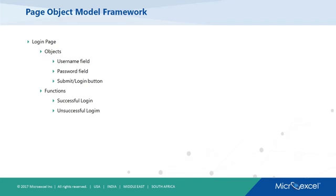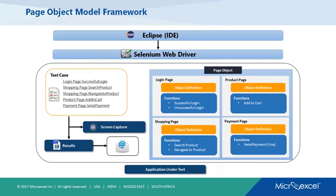All the element definitions and functions that can be done on a page are put in that class. When you create a test case, you just call those functions from the page class. For example, on a login page you may have three objects: username, password, and a submit login button, and two functions: successful login and unsuccessful login. The model looks very similar to the hybrid model — the key difference is the page object classes on the right side.